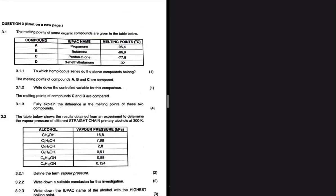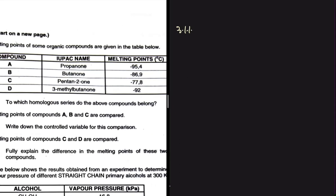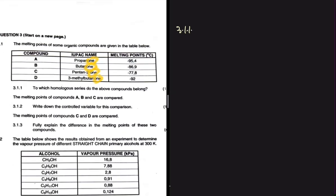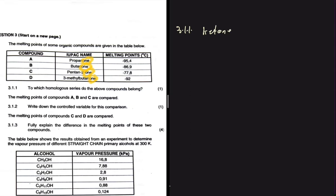The melting points of some organic compounds are given in the table below. Question 3.1.1 asks which homologous series the compounds belong to. Looking at how the names are ending, compound A ends in 'one', which indicates a ketone. All the compounds in our table end in 'one', so they all belong to the ketone series.